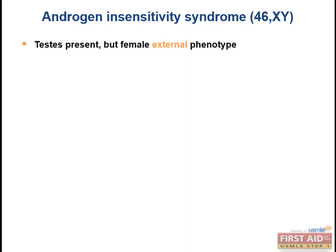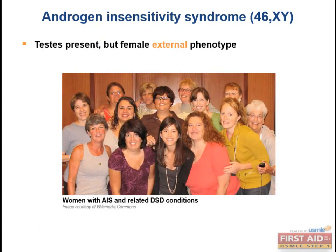Androgen insensitivity syndrome: the testes are present, but there's a female external phenotype. As we've discussed before, this is the equivalent of a defective androgen receptor. In androgen insensitivity syndrome, also known as testicular feminization syndrome, we have a defective androgen receptor. So it's as though testosterone is not even present, and if testosterone is not present, there will be a female external phenotype.